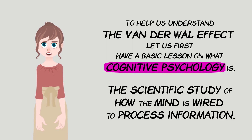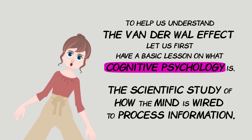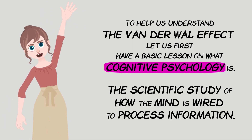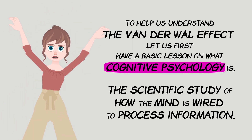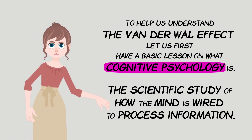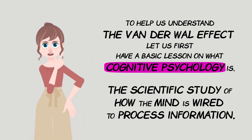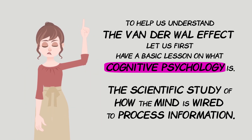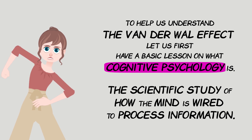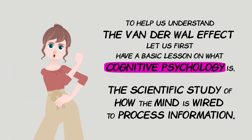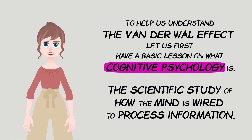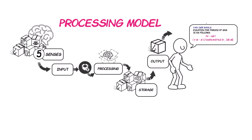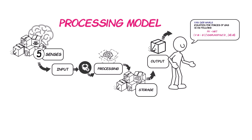To help us understand the Vanderwall Effect, let us first have a basic lesson on what cognitive psychology is — the scientific study of how the mind is wired to process information. The information processing model used here has four basic steps.